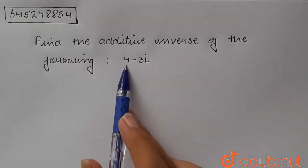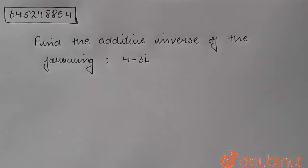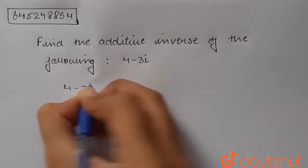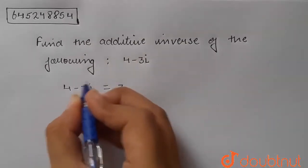We are having 4 minus 3i. So here we are going to take this 4 minus 3i equal to z. Let this thing be equal to z.